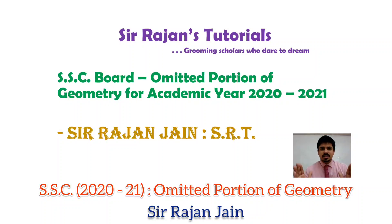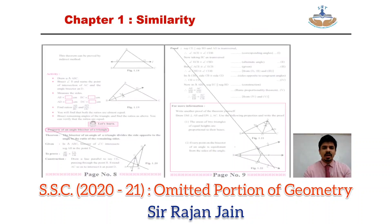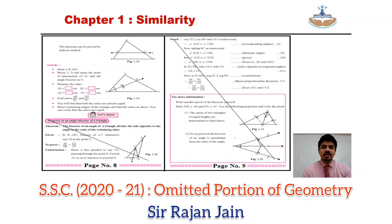This is for SSE Maharashtra board standard 10th. Let's start with the first chapter — similarity. Directly come to page number 8. On page number 8, at the bottom of the page, you will see the property of angle bisector of a triangle — that entire property is omitted. So on page number 8, cross out the bottom part of the page, and entire page number 9 is also omitted.